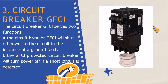GFCI circuit breakers protect the entire circuit. They are installed in the service panel or breaker box, adding GFCI protection to the entire circuit including the wiring and all devices and appliances connected to it. In cases where GFCI and arc fault circuit interrupter protection are both required, there are dual-function GFCI and AFCI circuit breakers that can be used. GFCI circuit breakers are more practical in situations where all outlets on a circuit require protection, such as a garage workshop or a large outdoor patio. However, they carry a higher cost, so installing a GFCI outlet at the first outlet on the circuit may be a more economical option.